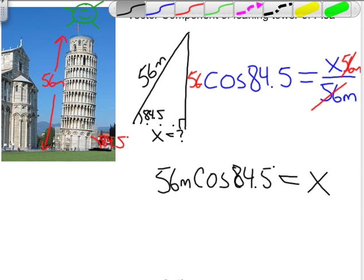And therefore, multiplying this out, we get that the shadow of the leaning tower of Pisa, in other words, the x component, is equal to 5.4 meters.